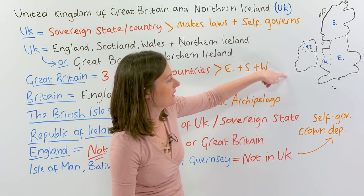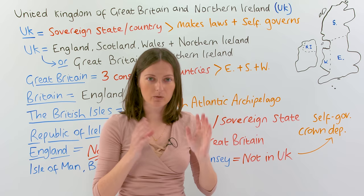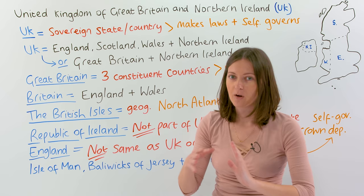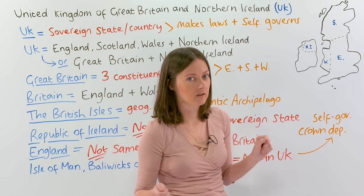So you think — if the UK is a country, are Scotland, England, Wales, and Ireland also a country? Well, they are, but they don't make their own laws. So we have a word for it: we can call them constituent countries. We can say England is a constituent country of the United Kingdom, Scotland is a constituent country of the United Kingdom, etc.